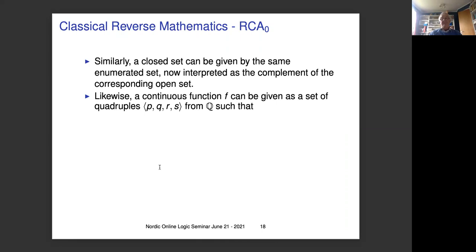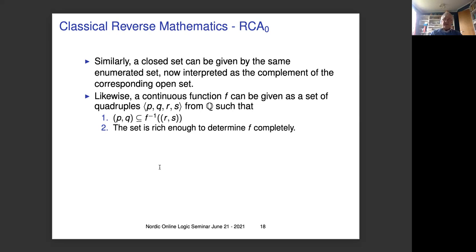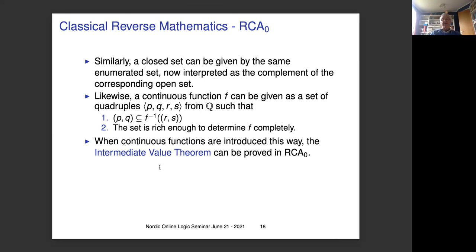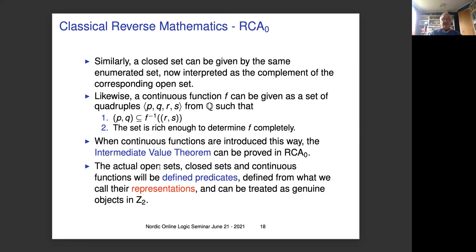When continuous functions are introduced this way, the intermediate value theorem can also be proved in RCA₀, and the Baire category theorem is quite easy to prove when open sets are given in this form. The actual open sets, closed sets, and functions will be defined predicates — defined from what we call a representation — and can be treated as genuine objects in set 2, because we can talk about them within L₂, though they are not there in the model.